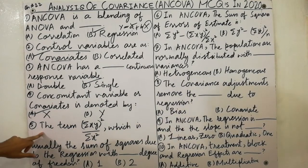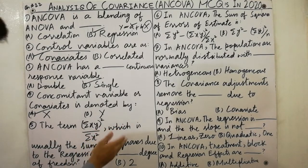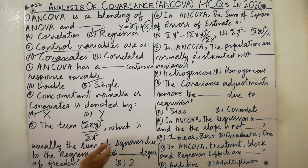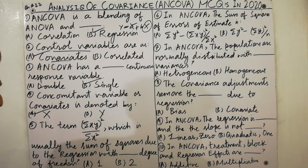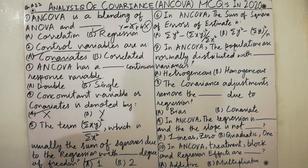The term — the sum of squares of XY, which is (ΣXY)² / ΣX² — is usually the sum of squares due to regression with one degree of freedom. Very simple.